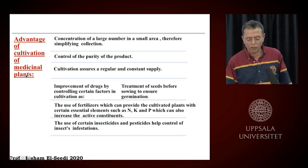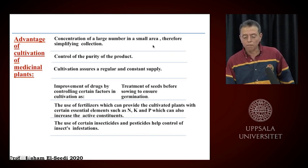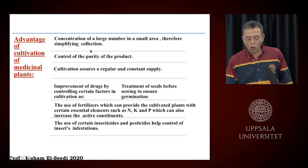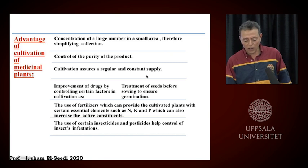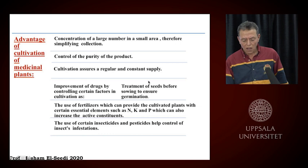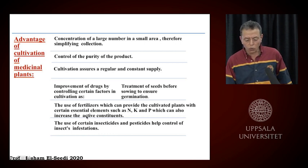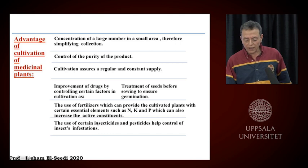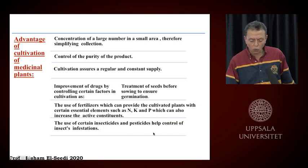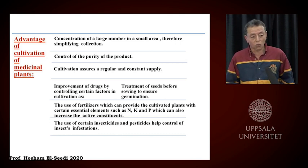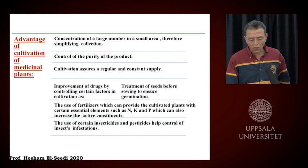The advantages of cultivation of medicinal plants: concentration of a large number in a small area, simplifying collection; control of the purity of the product; regular and constant supply, guaranteeing the amount needed; controlling cultivation factors; treatment of seeds before growing to ensure germination. We also use fertilization, providing essential elements like sodium, potassium, nitrogen, phosphorus, et cetera. Pesticides help control insect treatment, which is very important for controlling plant material regarding pesticides. All these are advantages of cultivation.